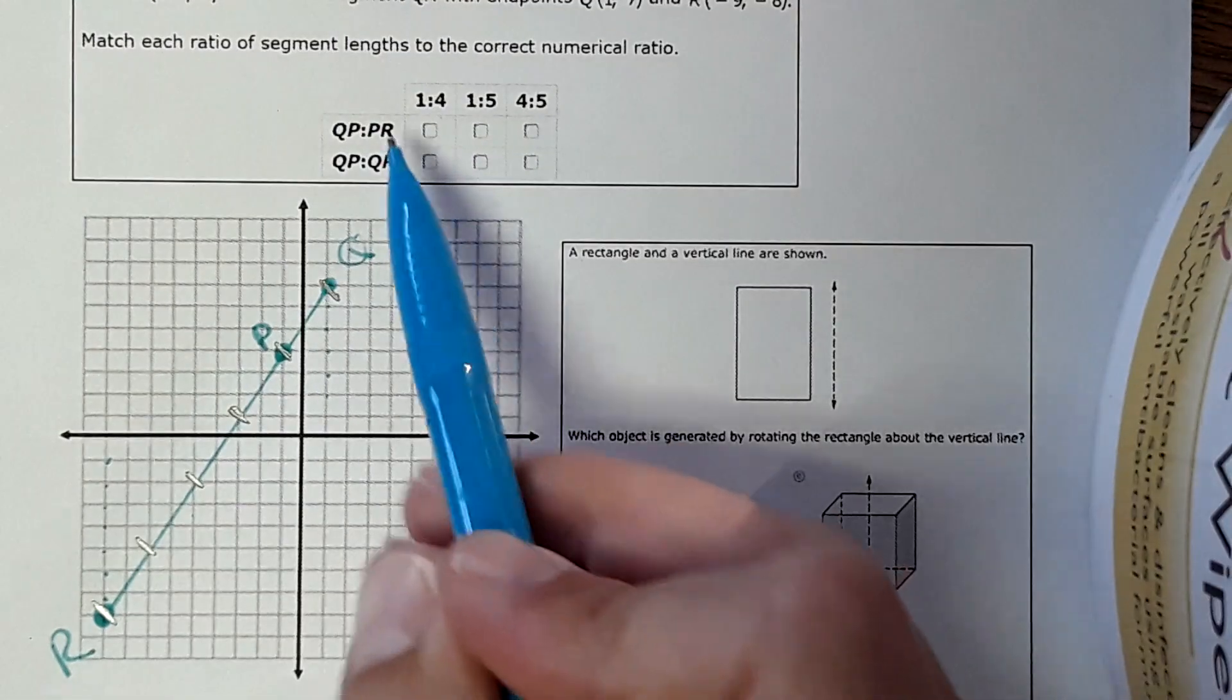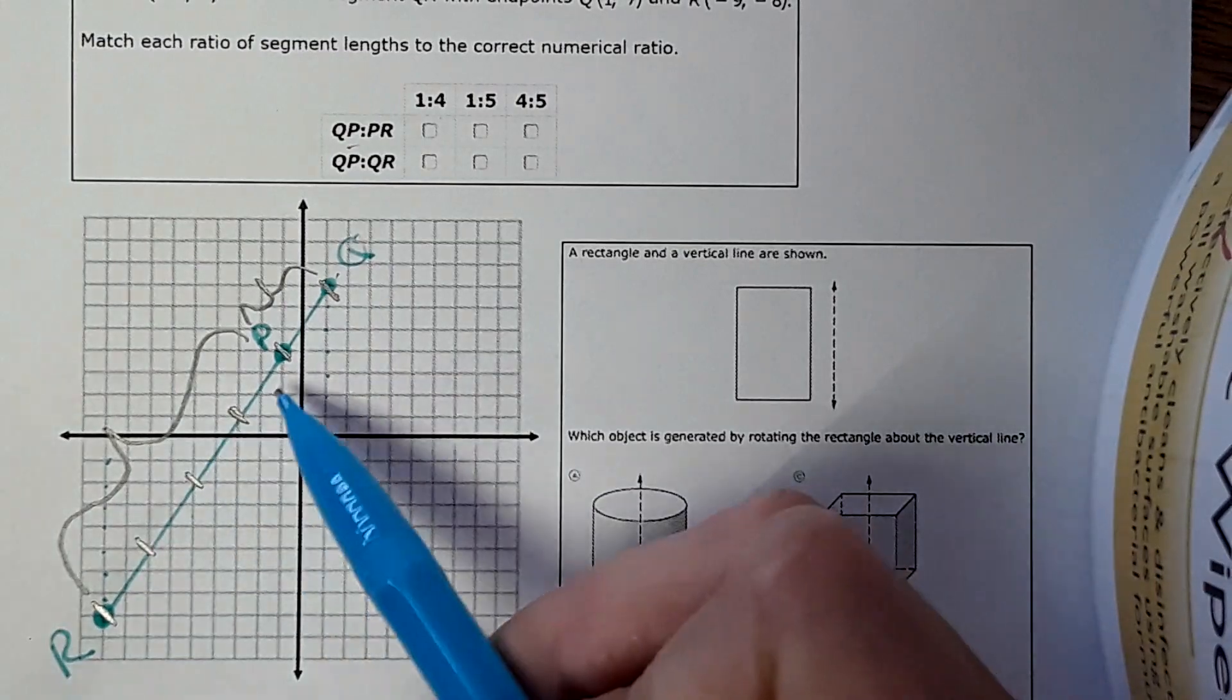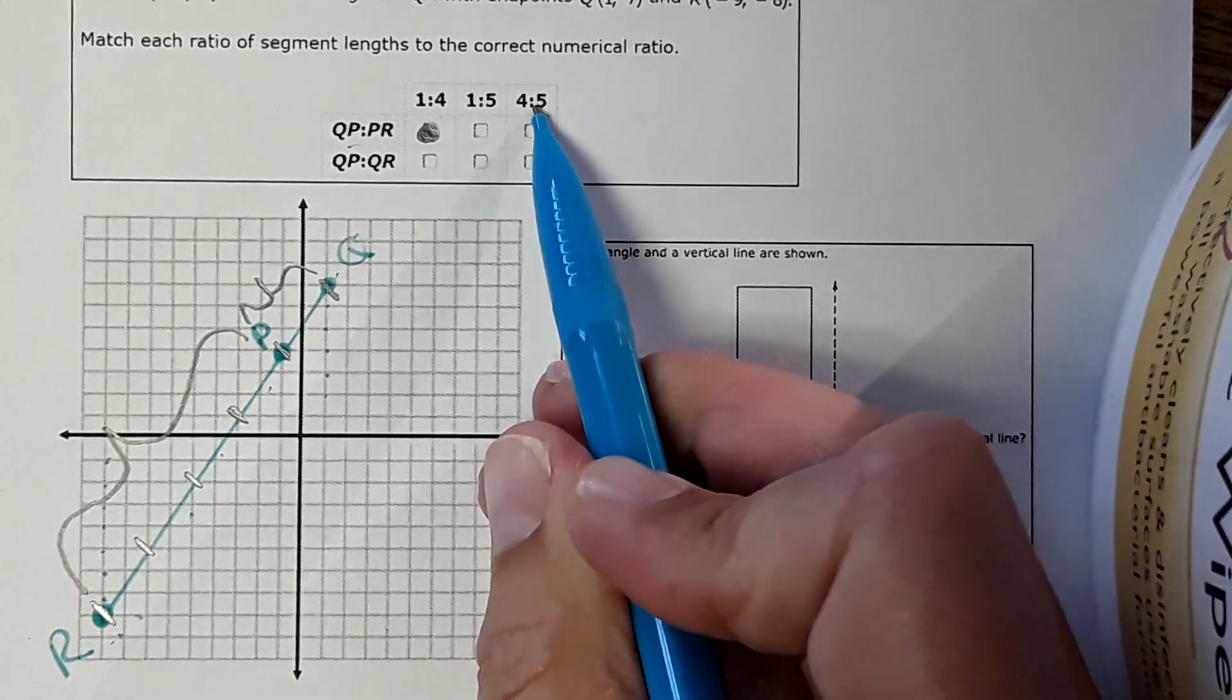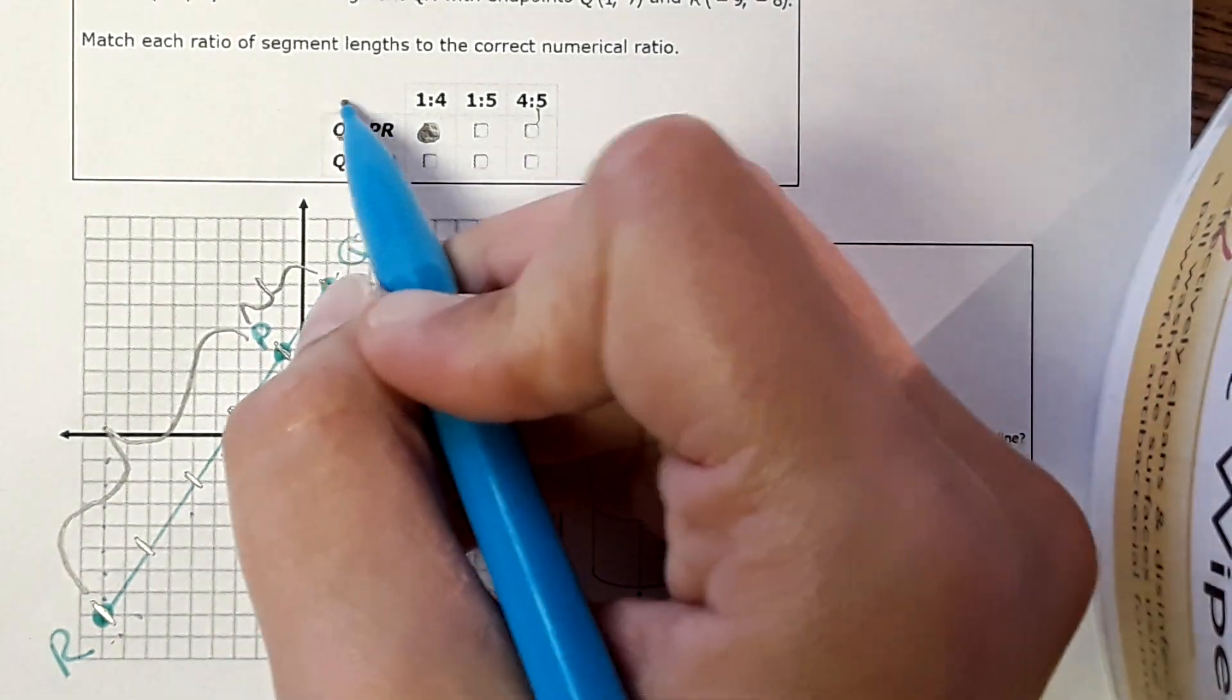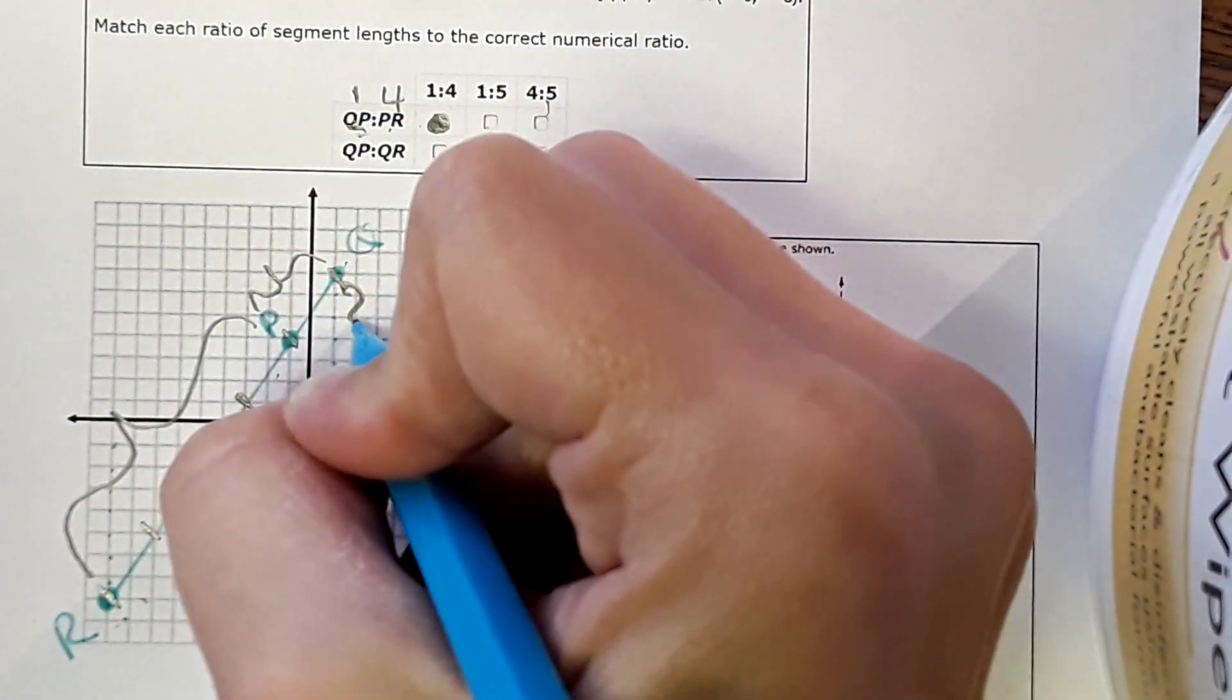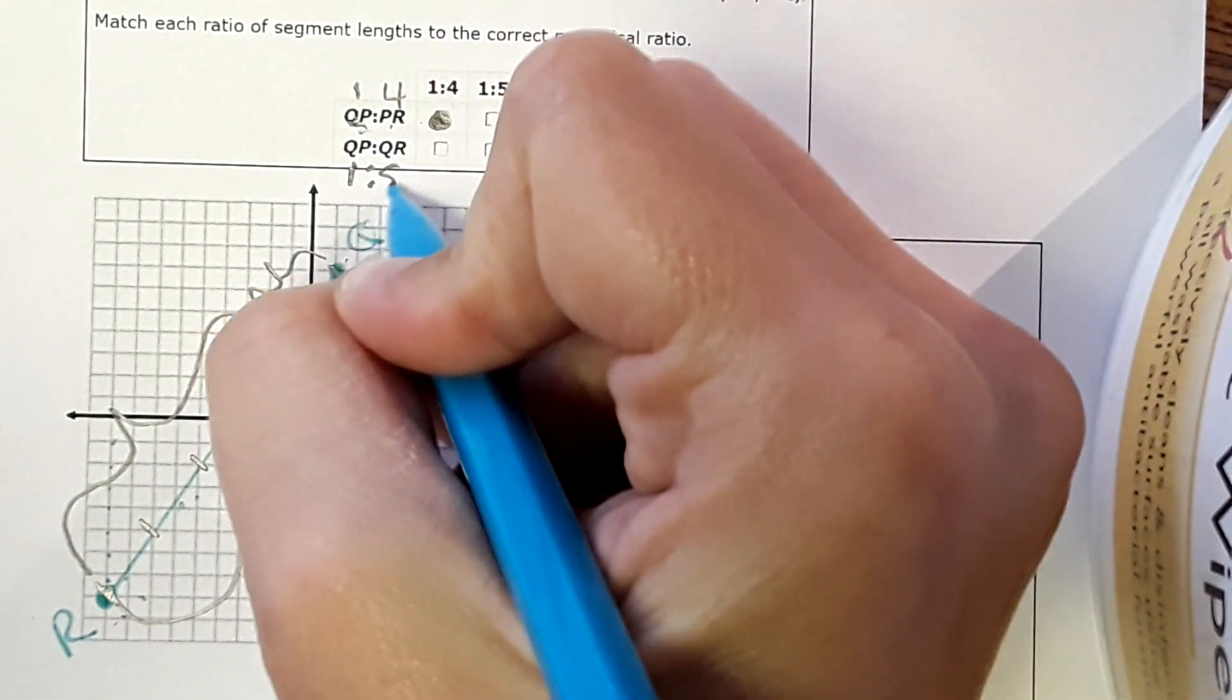Okay, so now it's saying what's in the correct ratio. It says QP to PR. So QP to PR. Well, QP is one segment, and PR is one, two, three, four segments. So one to four ratio sure is. Is it one to five? No, we just said it's one to four. Is it four to five? Nope. By the way, this has to be in order. So if QP is one part and PR is four parts, this ratio has to be one to four like that. Then the next one says QP to QR. So it's saying QP right here, this part, one part, to QR, which would be the whole thing, which is one, two, three, four, five parts. So that would be one to five. So that's this.